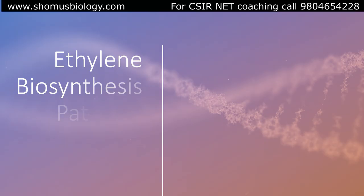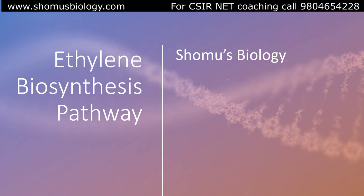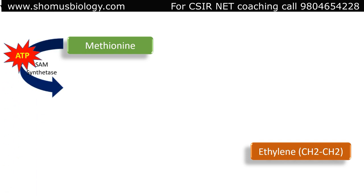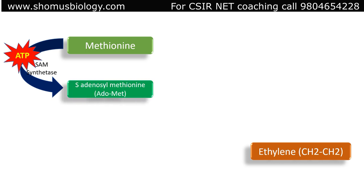Now let's talk about the ethylene biosynthesis pathway. Ethylene is a gaseous hormone quite readily produced by plants. The precursor for ethylene is the amino acid methionine. Methionine is converted by SAM synthetase, utilizing ATP, to form S-adenosyl methionine, also known as SAM or AdoMet.